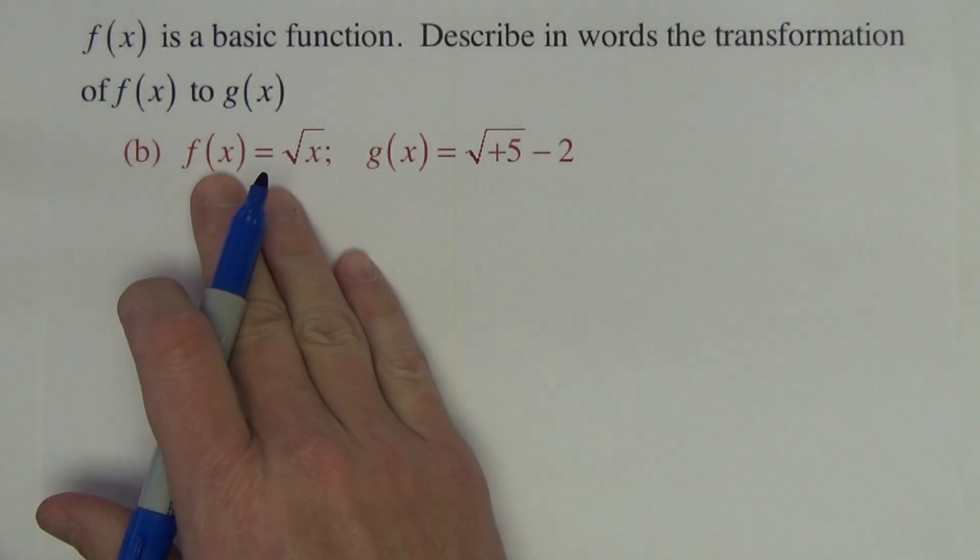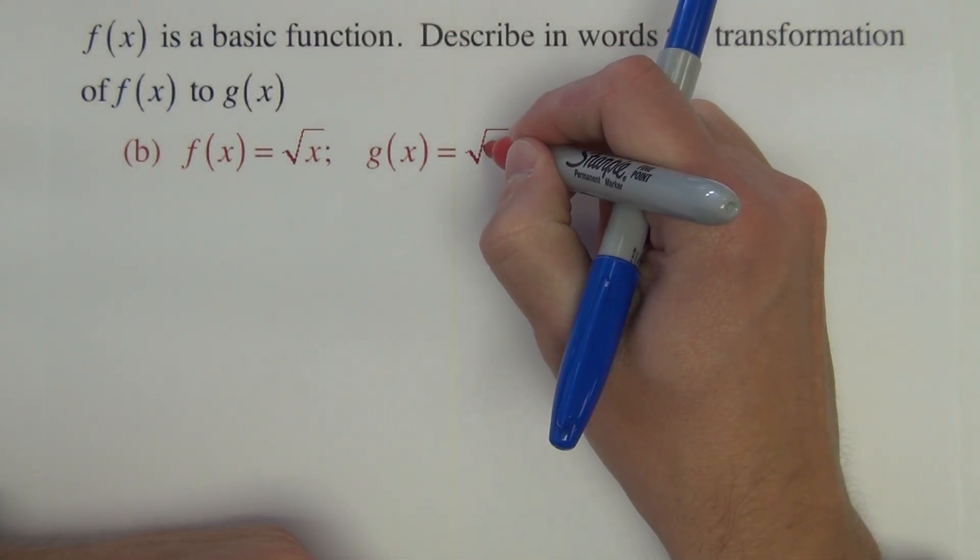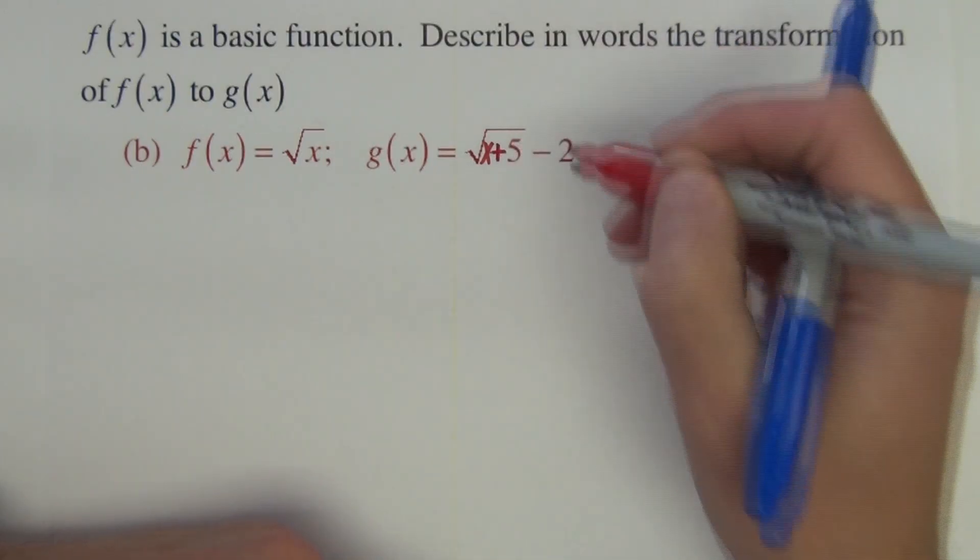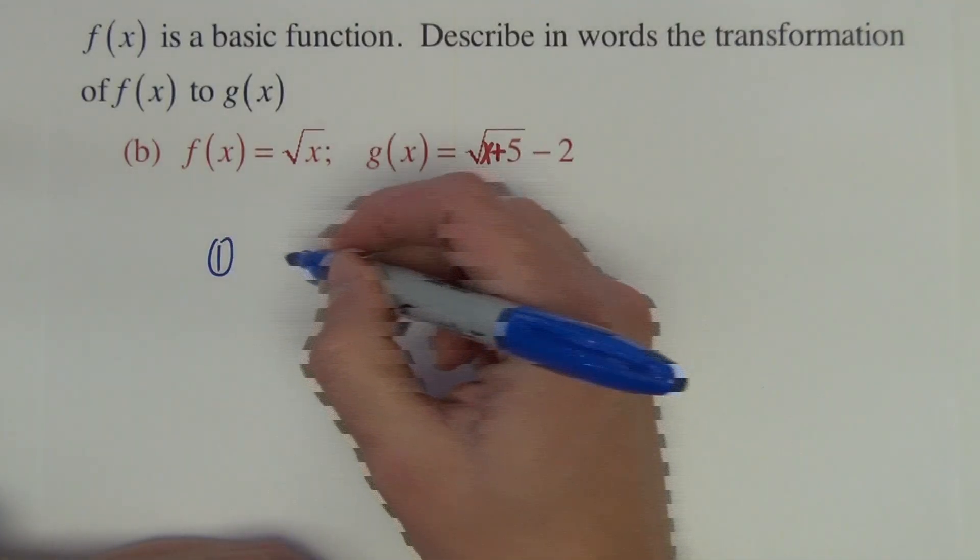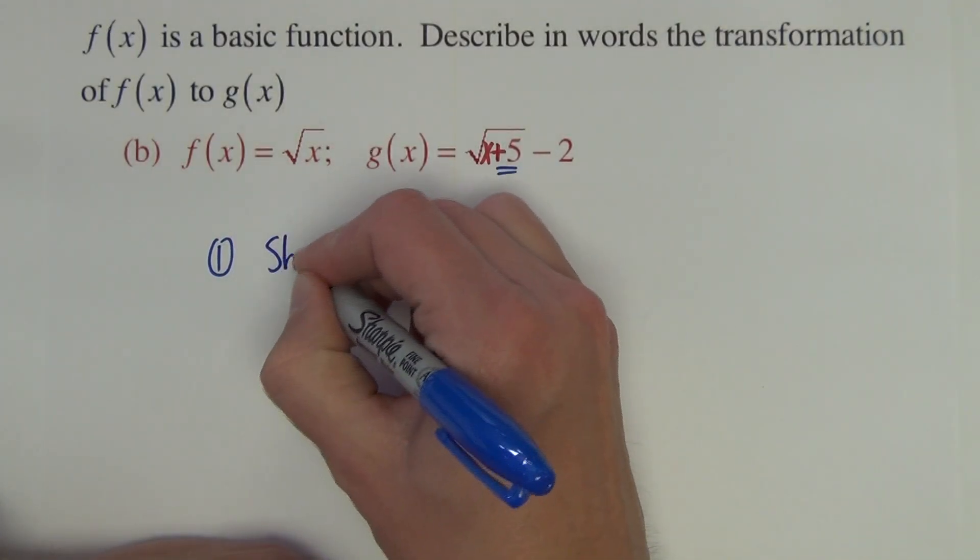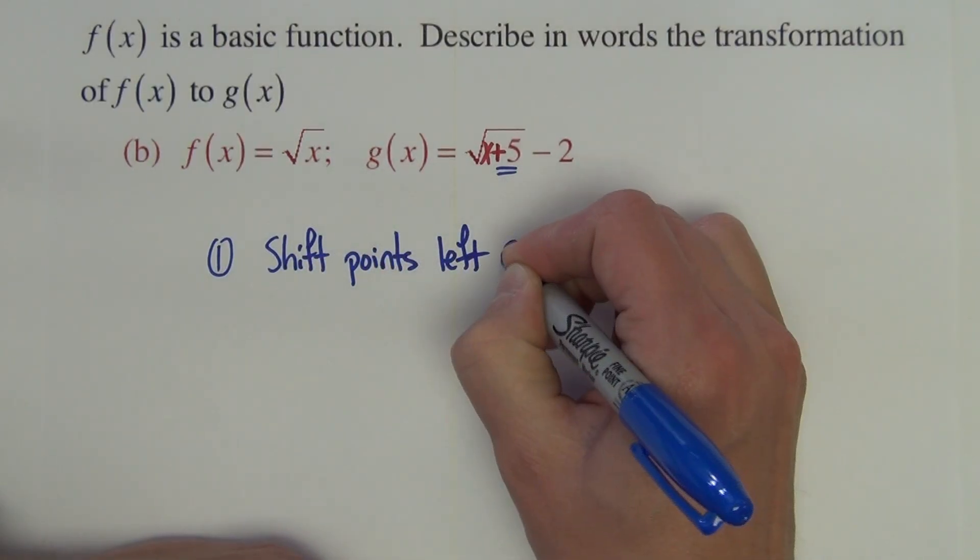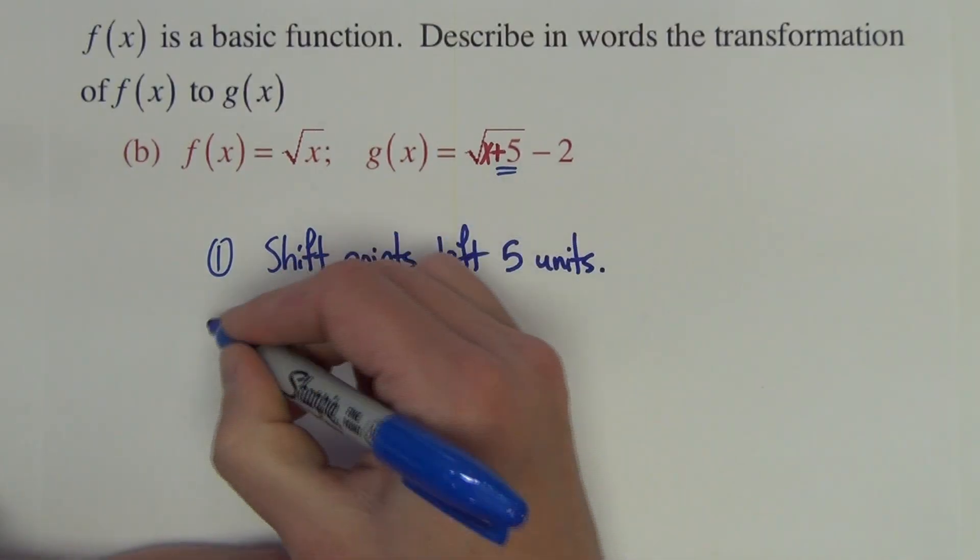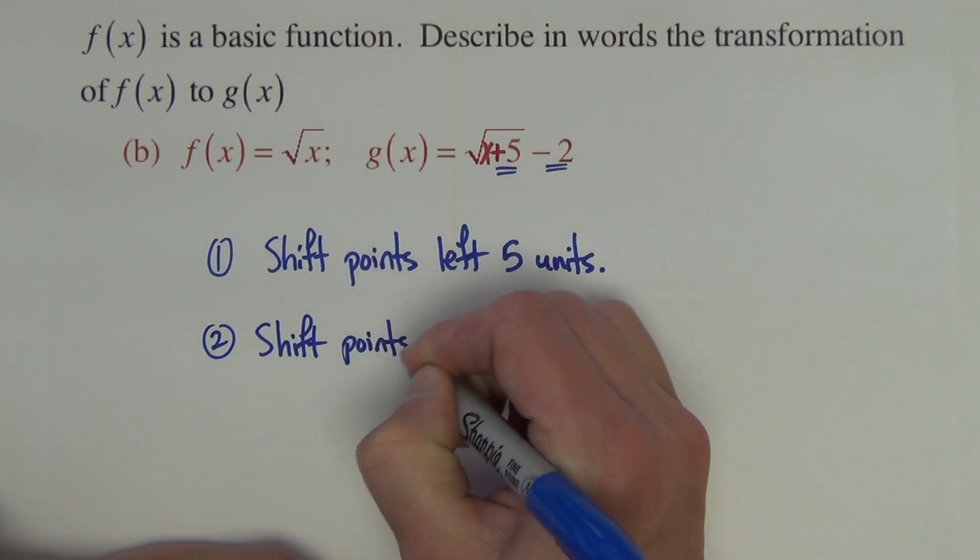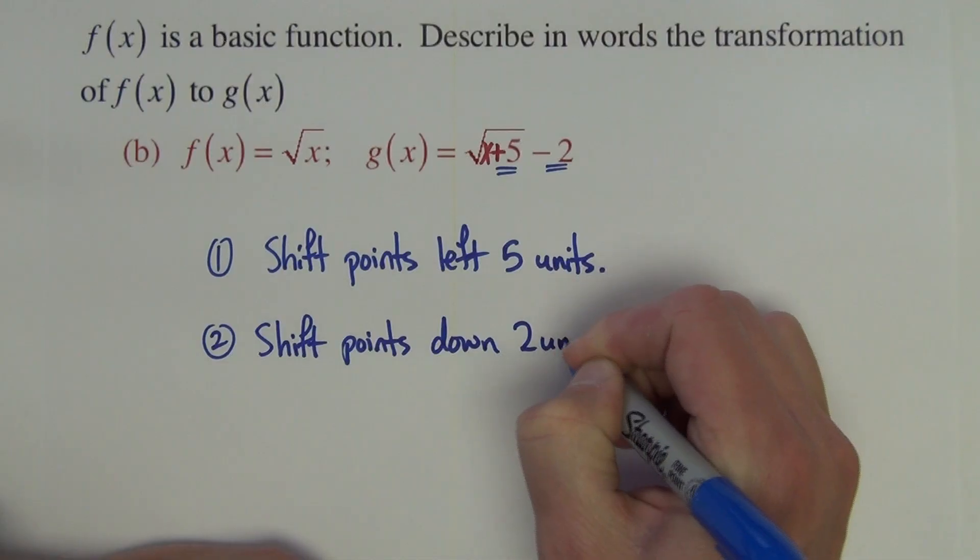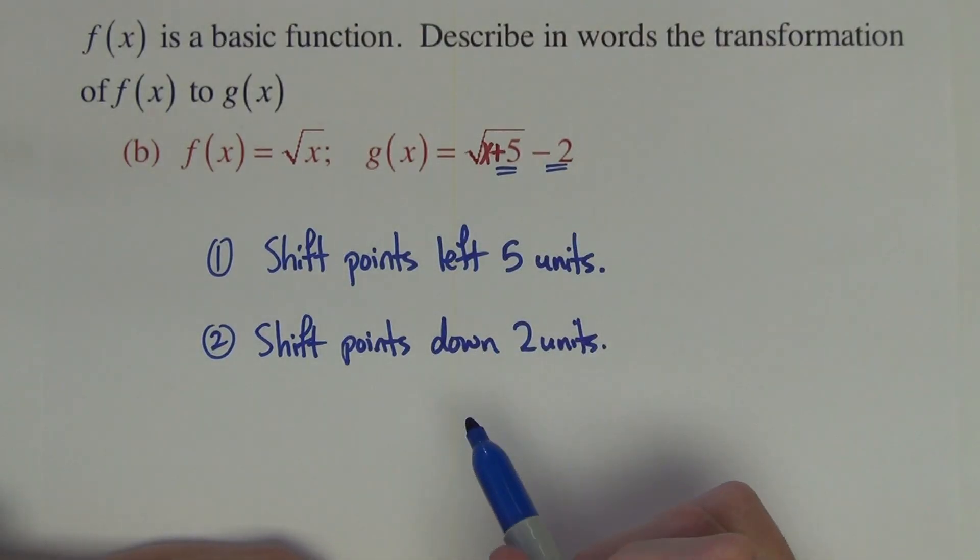The second one, again, we have f of x is the basic function, square root of x, and the g of x, there's actually a typo in g of x, I apologize. That should be square root of x plus 5 minus 2. So what is the transformation? The first thing that we're going to do is the plus 5. The plus 5 is going to shift points left 5 units. And then the minus 2 is going to shift the points down 2 units. So the plus 5 minus 2 is shifting all points left 5, down 2, and then replotting from there.